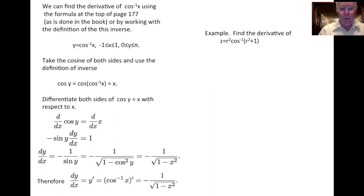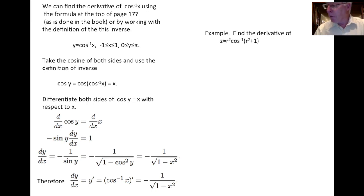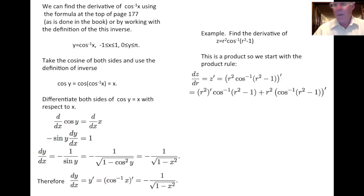So there we summarize the work above. Now let's look at an example using this in conjunction with other differentiation rules. We'll find the derivative of z, where z is defined as r² times cosine inverse of (r² + 1). This is a product, so we start by using the product rule, with r² multiplying cosine inverse of (r² − 1).